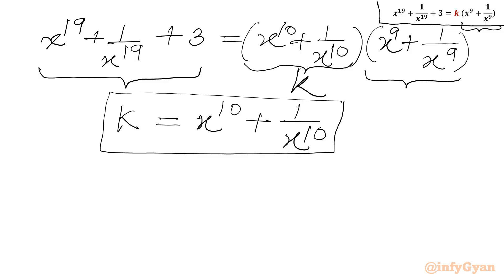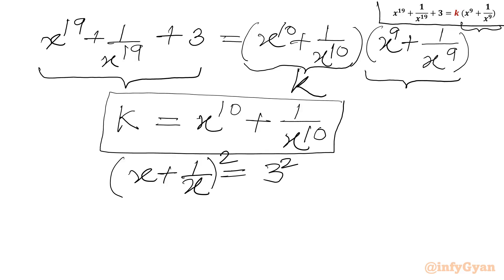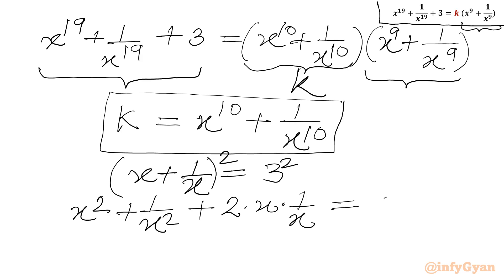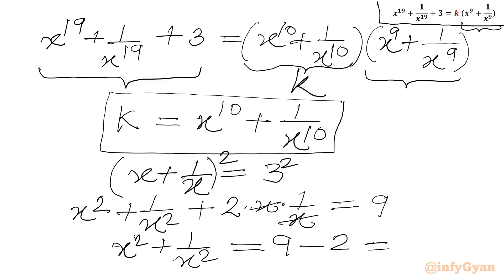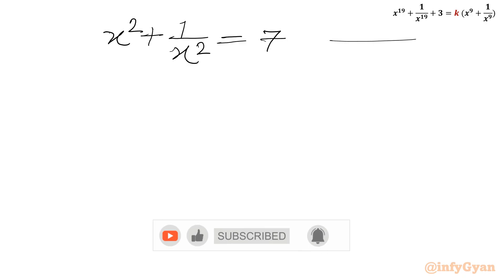Let us calculate. I will write x plus 1 over x equals 3 and consider squaring both sides. Applying the (a + b) whole square formula on the left-hand side: x squared plus 1 over x squared plus 2 times x times 1 over x equals 9. The x and x cancel, so I can write x squared plus 1 over x squared equals 9 minus 2, which equals 7. We will call this equation number 1.